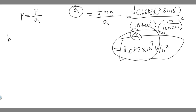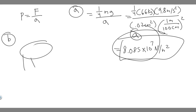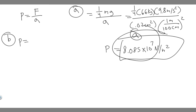Now let's do B. It's basically the same approach — pressure equals force over area. The force is just mg again, because we have the elephant standing on one foot. Since all the weight is on one foot, we don't have to divide by four. So the mass is 1,300 kg, multiplied by gravity, 9.8 m/s².